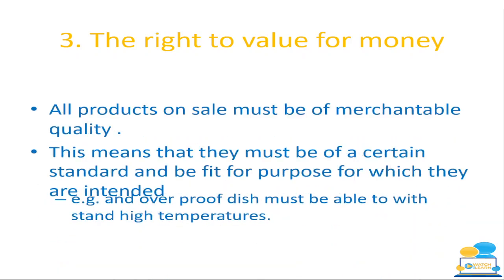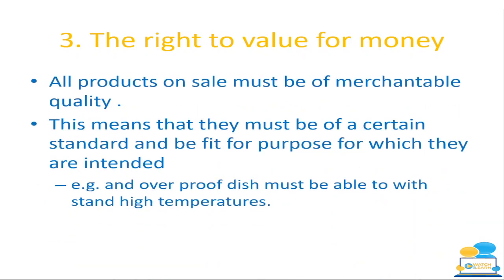Our third right is the right to value for money. All products on sale must be of merchantable quality — we'll look at that in more detail under the Sale of Goods and Supply of Services Act 1980 later in this video. Essentially, merchantable quality means they must be of a certain standard and fit for the purpose for which they're intended. For example, if I get a pair of wellies and wear them in the field and water starts seeping in through my socks, they weren't fit for purpose — they're not of merchantable quality. If you have an oven-proof dish and you put it in the oven and it cracks and explodes, it's not an oven-proof dish because it can't withstand the high temperature.